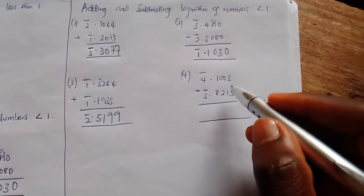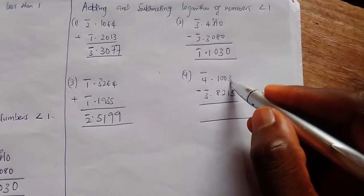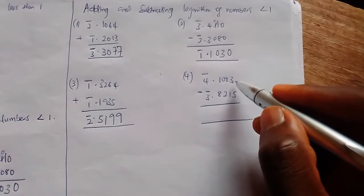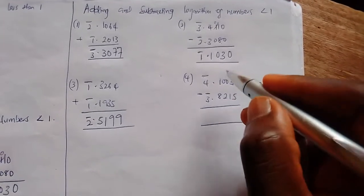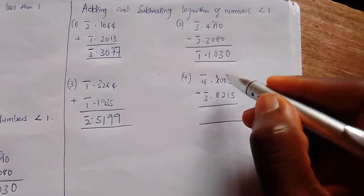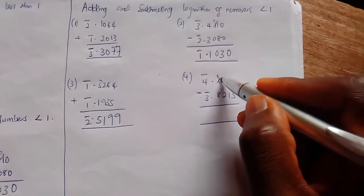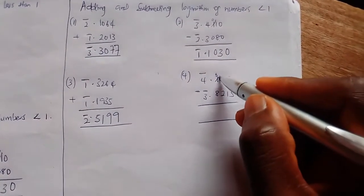Now for number four, I cannot subtract five from three, so I'll borrow one from this point. This point remains zero. The one I borrow becomes ten here. Borrow one again, it becomes nine because I'm going to put it here.